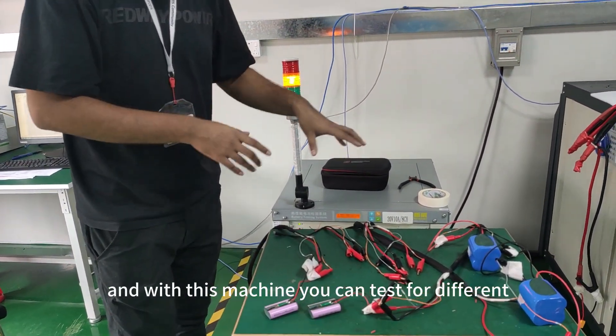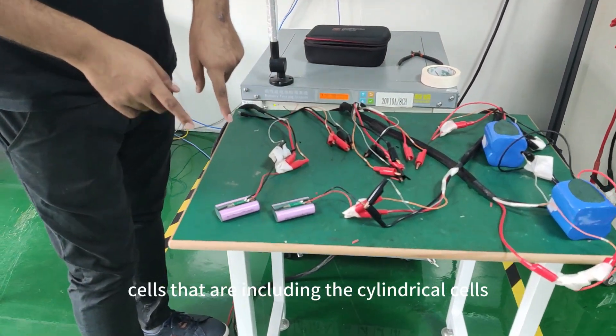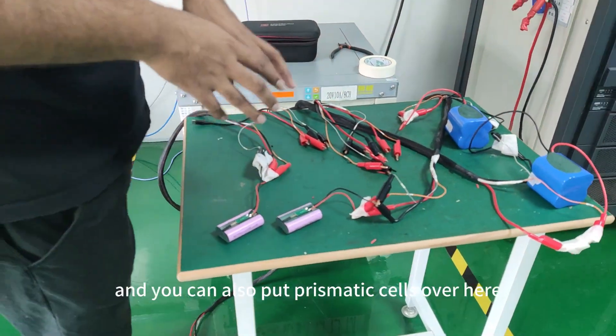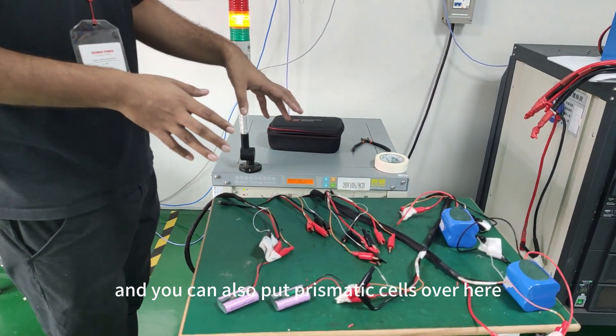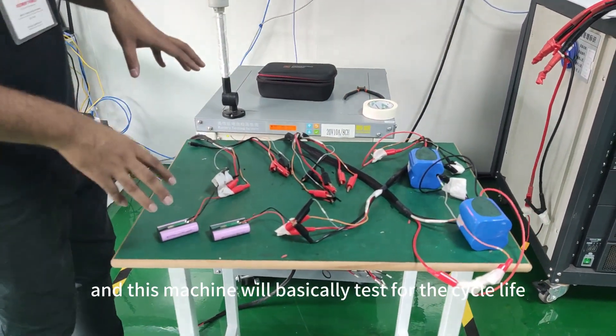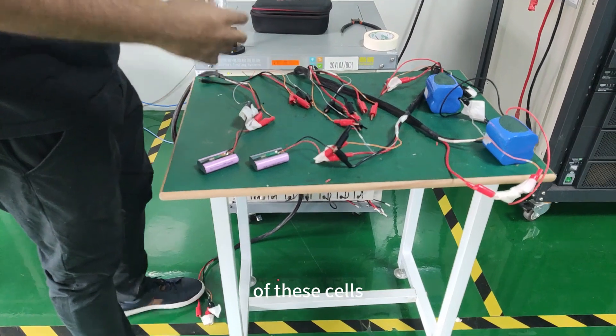And with this machine you can test different cells including cylindrical cells, and you can also put prismatic cells over here. This machine will basically test for the cycle life of these cells.